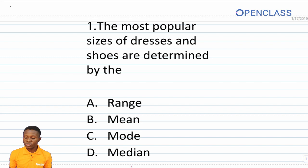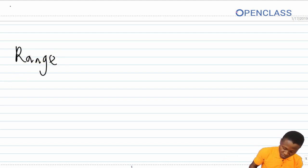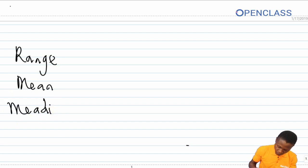Okay, to start with, the first question I'm going to be reading is the 2017 economics first question. And it goes as follows. The most popular sizes of dresses and shoes are determined by the A, range, B, mean, C, mode. And the last option there, D is median. Lest you forget: range, mean, median, and mode.